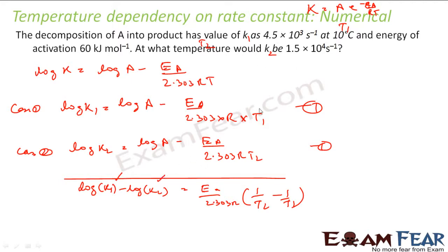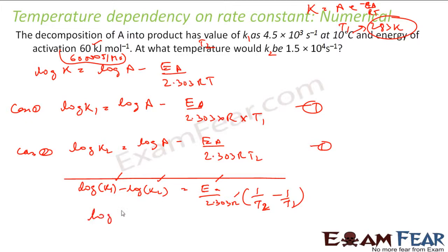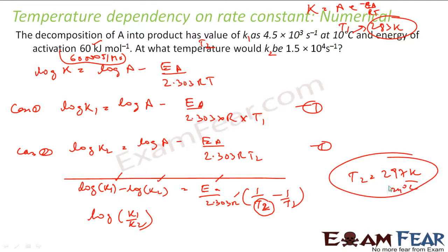In this formula we know K₁, K₂, and activation energy — though Ea must be converted from kJ/mol to J/mol. We also know R equals 8.314 and T₁ equals 283 K. The only unknown is T₂. We can also write log K₁ minus log K₂ as log(K₁/K₂). Substituting all values gives T₂ equal to 297 K, which is 24°C.